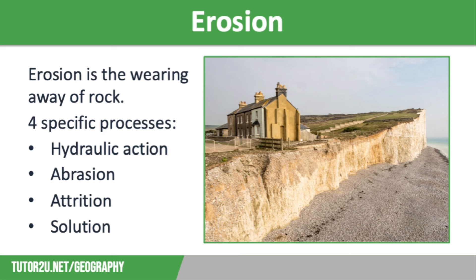Erosion is the wearing away of rock, and there are four specific processes that you need to know. Firstly, we have hydraulic action. This is where the force of the water erodes the rock. The waves pound the base of the cliffs, forcing water into cracks. As the water goes into these rocks the air compresses, and as it leaves the pressure is suddenly released, which breaks down the rock from inside, with some of the rock coming off in large chunks.